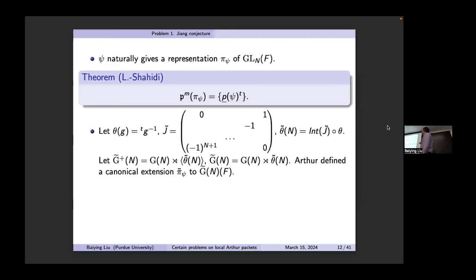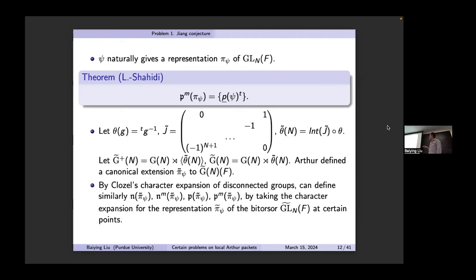You have to use a certain conjugation to construct a disconnected group: GL⋊ GL is GL. We consider the other component and define a canonical extension of the Π-side to this other component — this is called the bi-torsal representation. By using the Lusztig character expansion of the connected group, one can similarly define these sets for the bi-torsal representation by taking the character expansion at certain points.